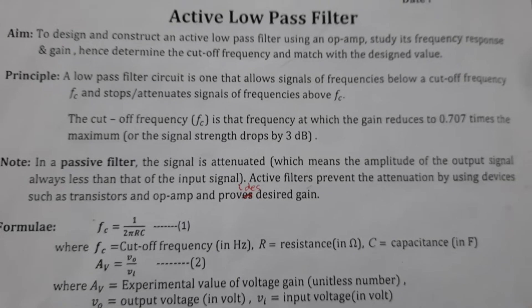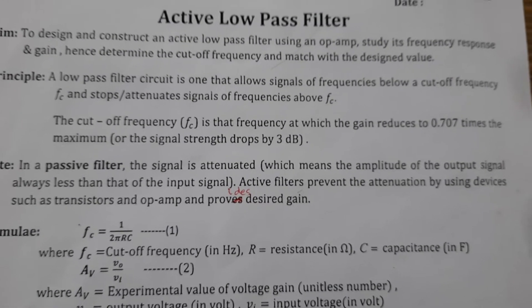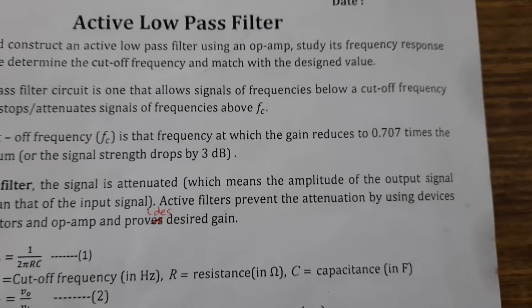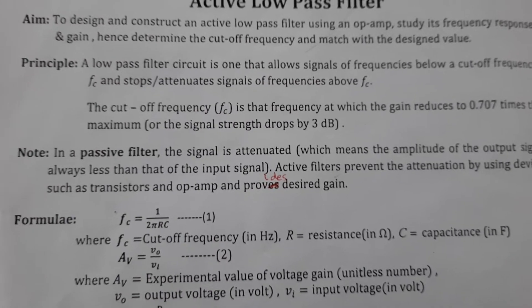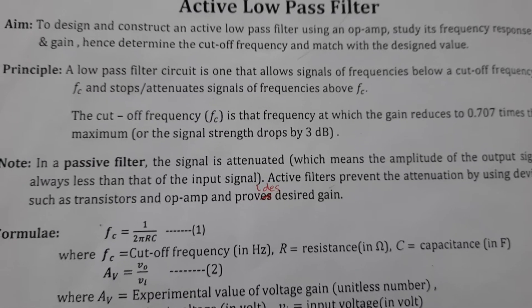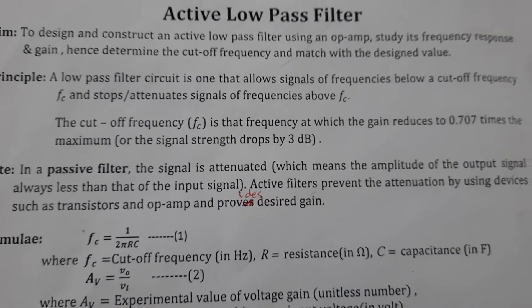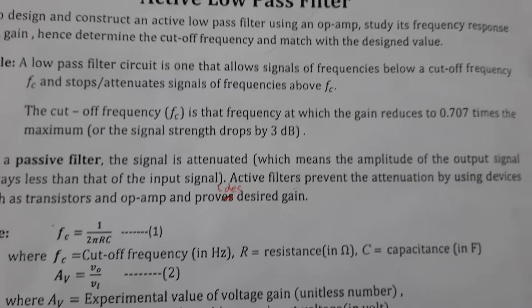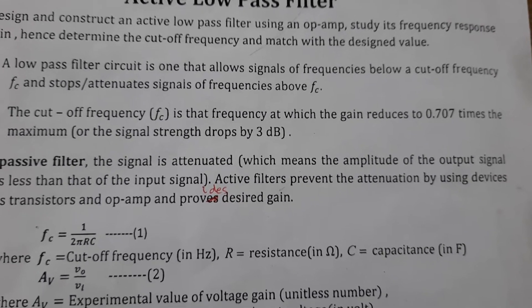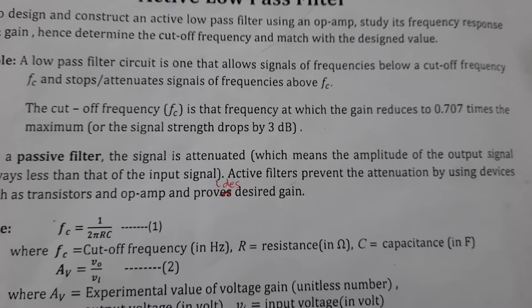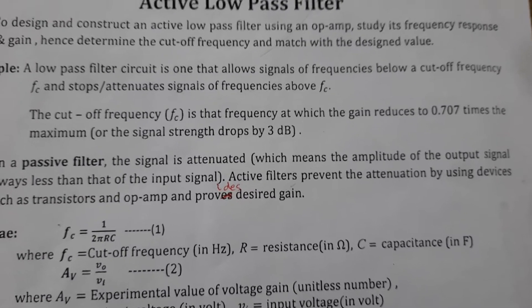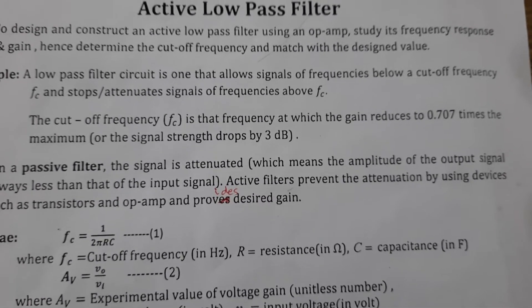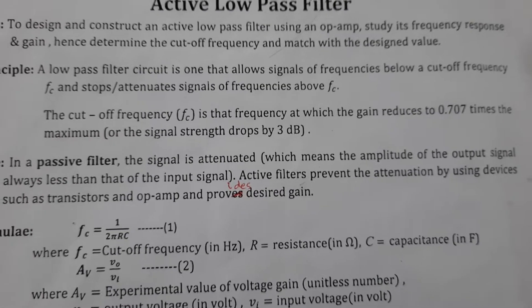A low pass filter circuit is one that allows signals of frequencies below a cut-off frequency and attenuates signals of frequencies above fc. The cut-off frequency is that frequency at which the gain reduces to 1 by root 2, or 0.707 times the maximum gain.